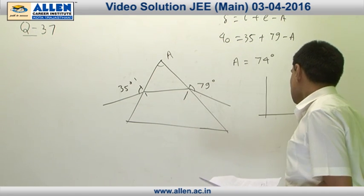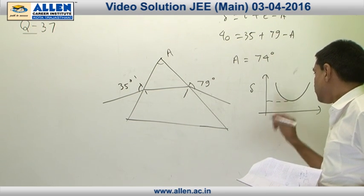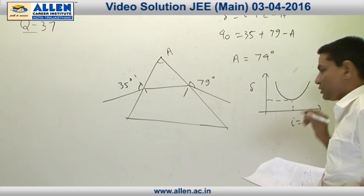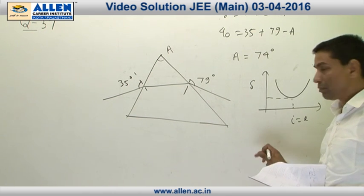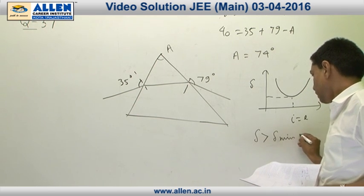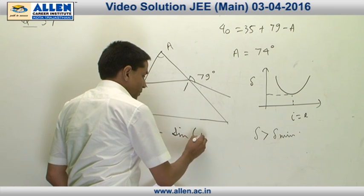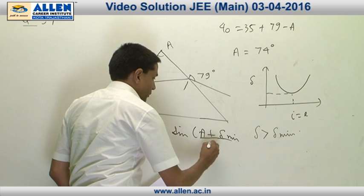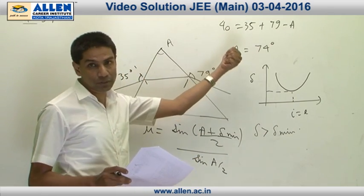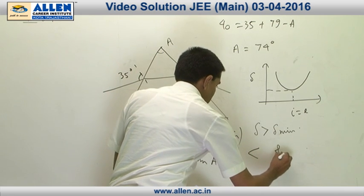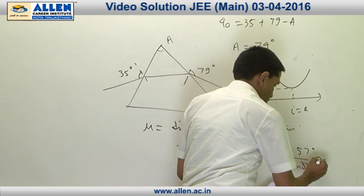The graph for deviation versus angle of incidence is something like this. At the minimum possible angle of deviation, we can say that the angle of incidence is equal to angle of emergence. In this case, angle of incidence and angle of emergence are not the same. If they are not the same, deviation is not the minimum, here deviation is greater than the minimum deviation. If the deviation would have been the minimum deviation, the mu refractive index would have been given by sine of A plus delta min by 2 upon sine A by 2. We can very well see that this minimum deviation happens to be less than the present deviation which is 40 degree. This happens to be less than sine of 57 degree upon sine of 37 degree. This comes out to be approximately 1.4.